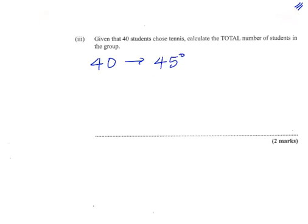That 45 degrees is represented by 40 students. I don't know the total number of students, I'm going to call that x. And this total number of students will be represented by 360 degrees, which is the amount of degrees in a circle.